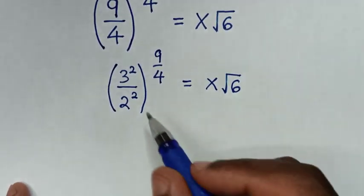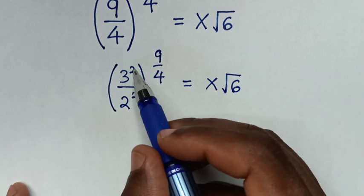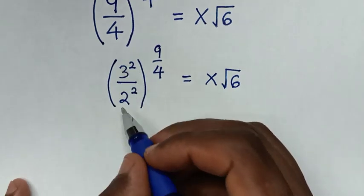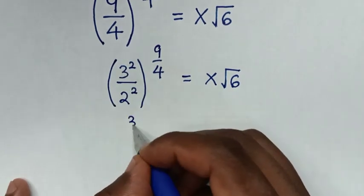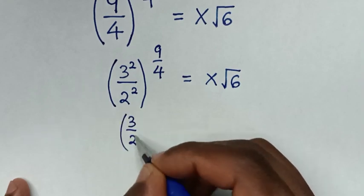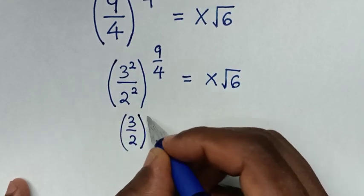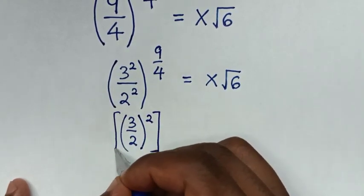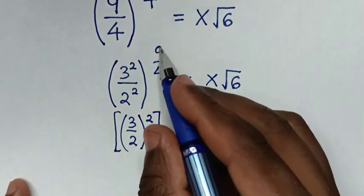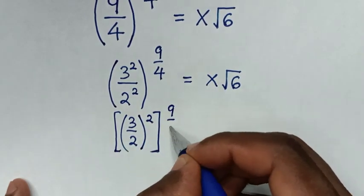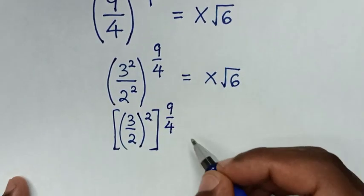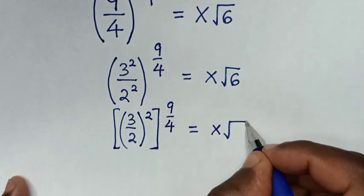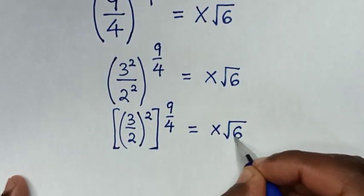Then in the next step, inside the bracket a power of 2 is common, so it will be (3 over 2) bracket power of 2, then bracket power of 9 over 4, and this is equal to x square root of 6.